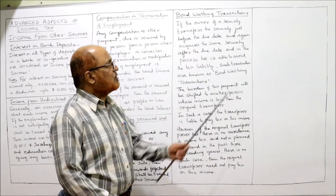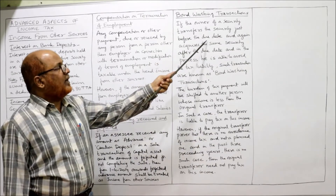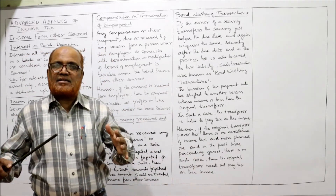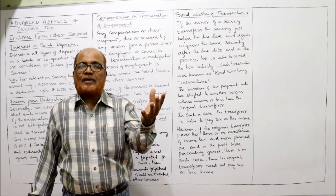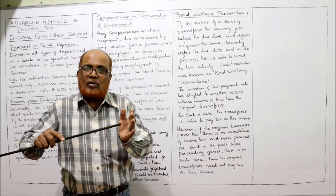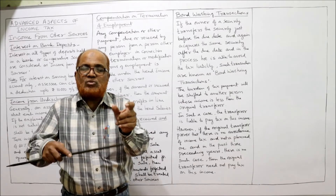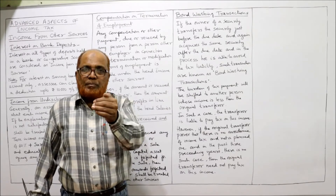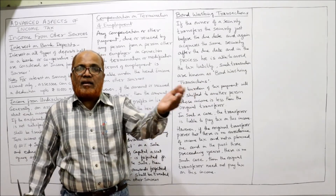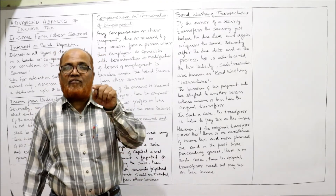The last point is bond washing transaction. If the owner of a security transfers the security just before the due date and again acquires the same security after the due date, it is called a bond washing transaction. The due date is the date on which interest is declared and paid. For example, Mr. X transfers his bonds or securities to Mr. Y just before the due date, and after the due date repurchases the same securities from Y — this is the process.